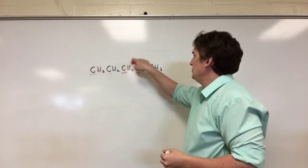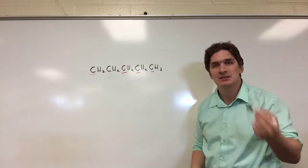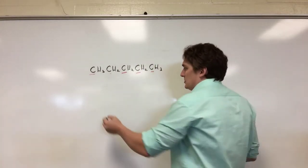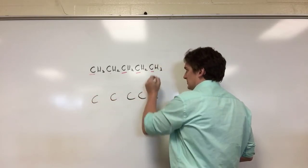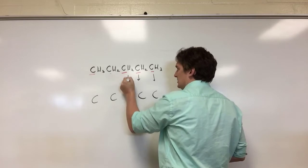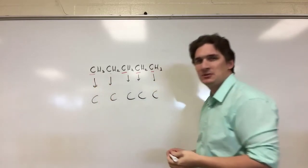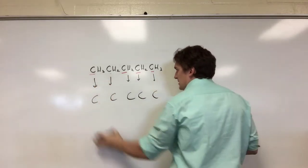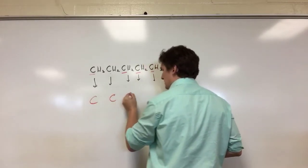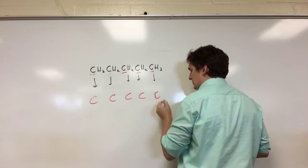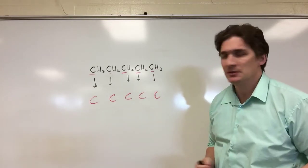We have one, two, three, four, five functional groups, which means we should have five atoms that constitute central atoms. We're going to draw them out in a line. We have that carbon, that carbon, that carbon, that carbon, that carbon — I'll draw it all in red. This is going to make up the backbone of the molecule.